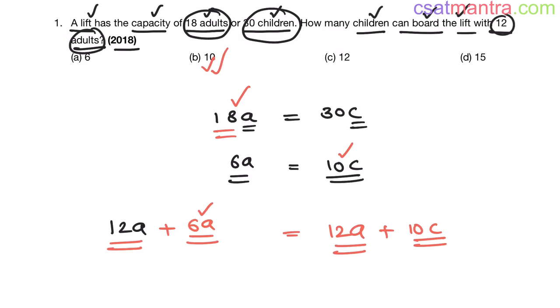Very simple question my friends. Just write adults weight in terms of children's weight from the information given. From that you can solve the problem easily my friends.